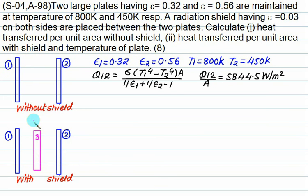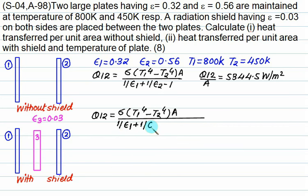Calculate with shield, epsilon 3 is 0.03. We don't know the temperature of 3, but we can write down that Q12 consists of sigma into T1 to the power 4 minus T3 to the power 4. There are three resistances between 1 and 3: 1 upon epsilon 1 plus 1 upon epsilon 3 minus 1, and there are three more from 3 to 2 that equals 1 upon epsilon 3 plus 1 upon epsilon 2 minus 1. This arrangement is only possible for flat plate.